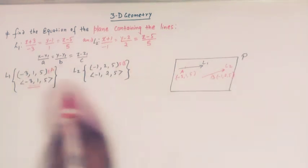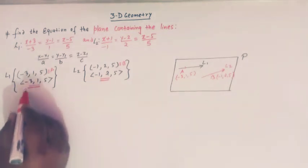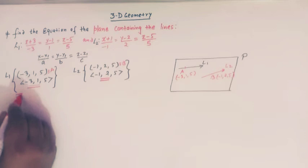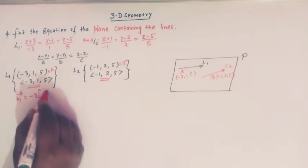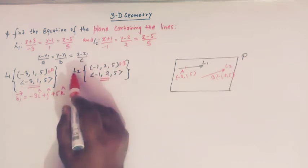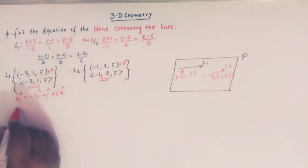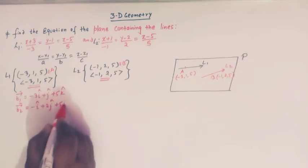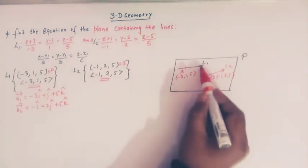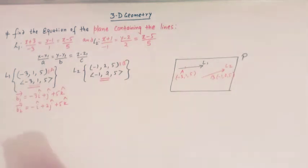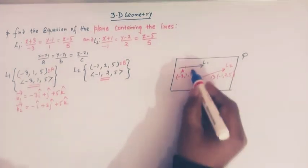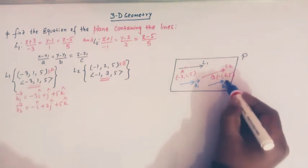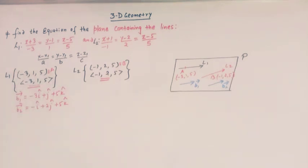Line L1 has a direction represented by vector b1, which we write as −3î + ĵ + 5k̂. The direction of line L2 is represented by vector b2, written as −î + 2ĵ + 5k̂. So b1 gives the direction of L1 and b2 gives the direction of L2.